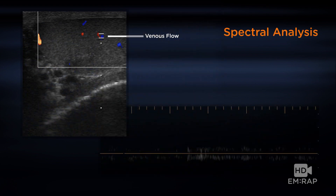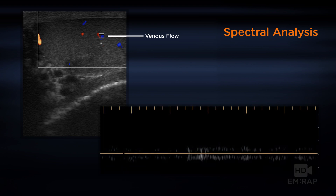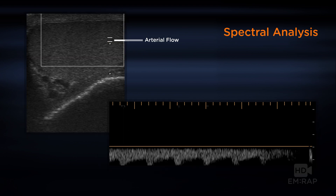Here is the unaffected testicle showing a venous waveform. You can see blood flow captured between these two calipers — it has a very smooth appearance. That's opposed to an arterial waveform, which has a spike that gradually comes down during diastole. That gradual decline is the low resistance pattern you want to see in a testicle.